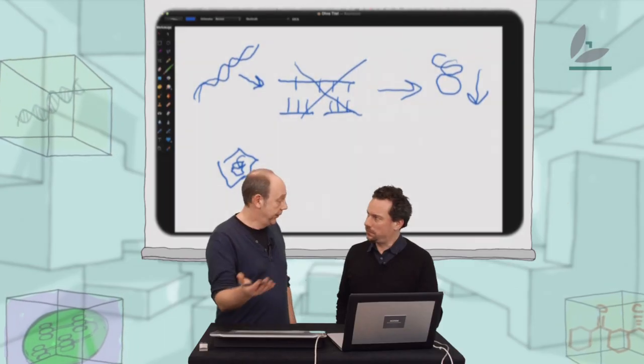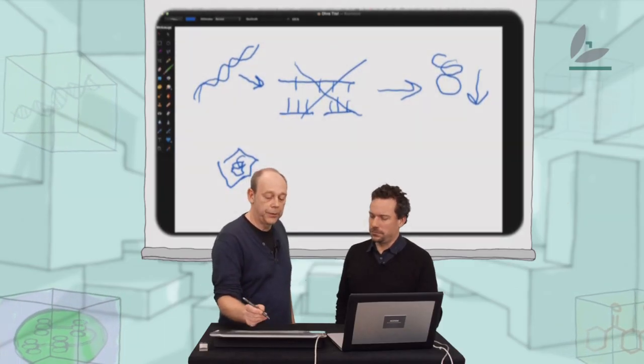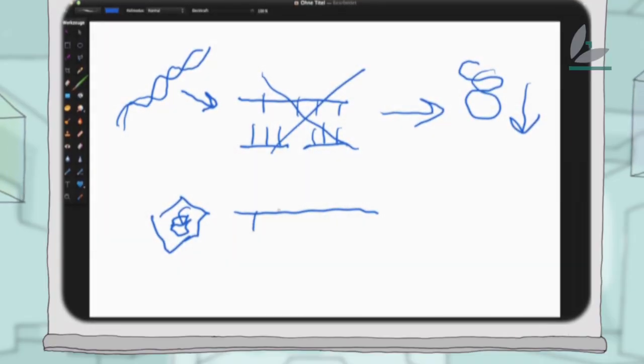Or the virus itself produces RNA molecules. These RNA molecules are recognized as foreign molecules which don't normally exist in a plant cell. This triggers the production of small RNA.